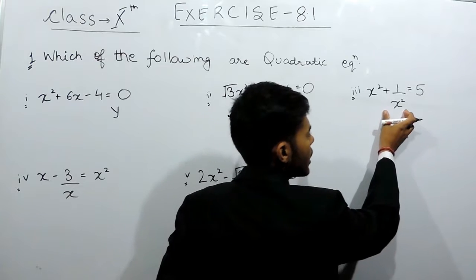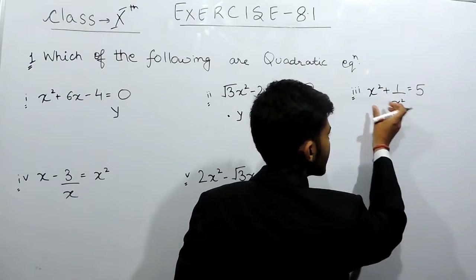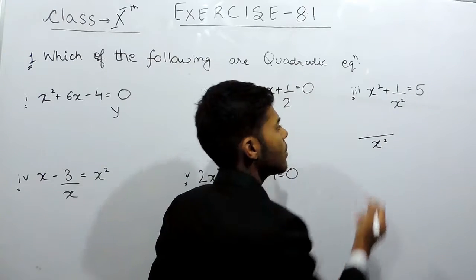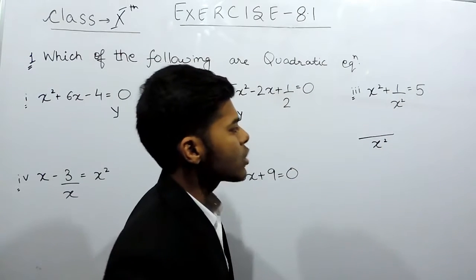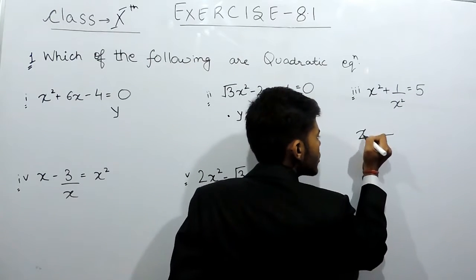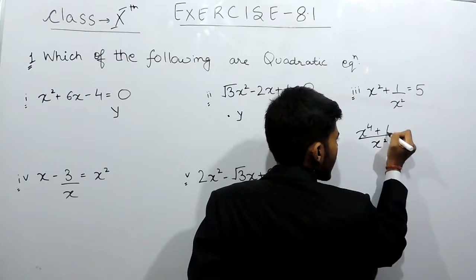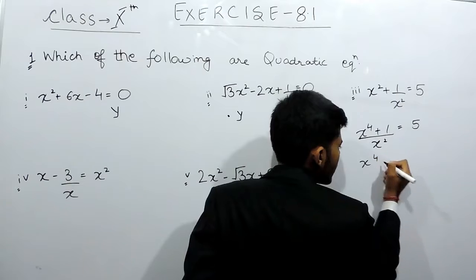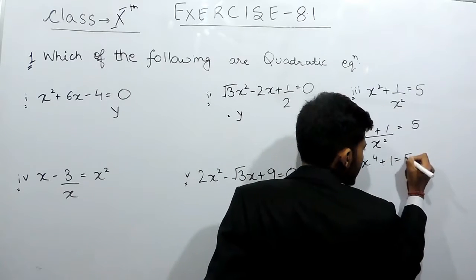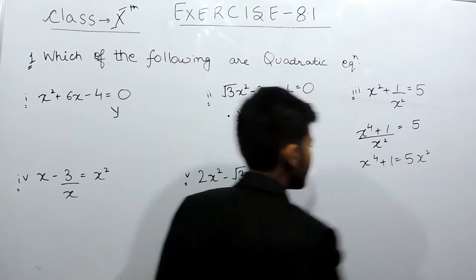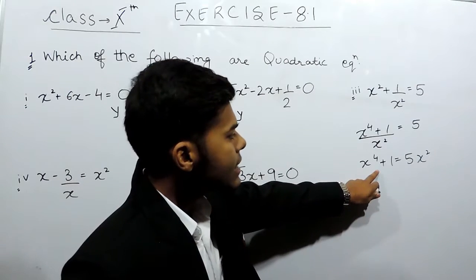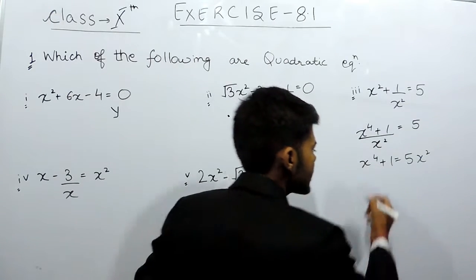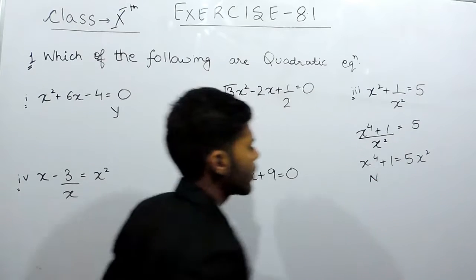In the third part, we need to solve it first. The LCM will be x squared. Multiplying through gives x squared times x squared, which equals x to the power 4 plus 1 equals 5. So this becomes x⁴ + 1 = 5x². Here the highest degree is 4, so this is not a quadratic equation.